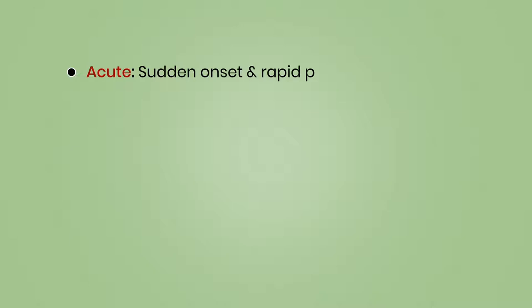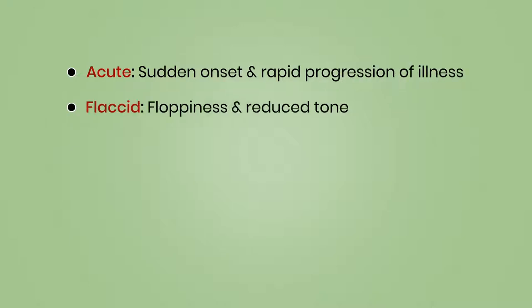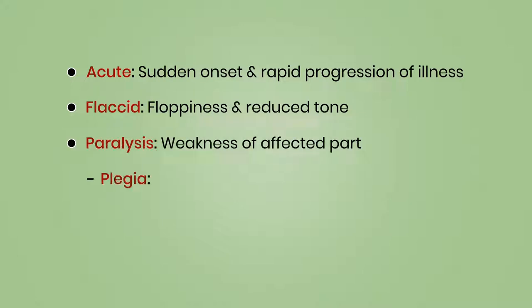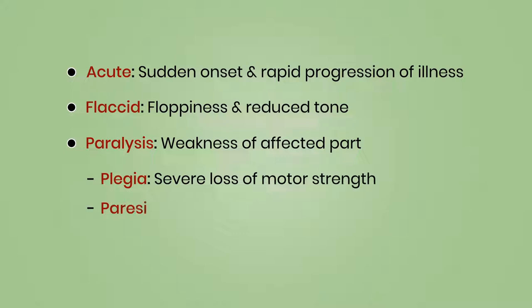Acute refers to sudden onset and rapid progression of illness. Flaccid refers to floppiness and reduced tone. Paralysis means weakness of the affected part. Plegia refers to severe loss of motor strength, while paresis refers to slight loss of motor strength.